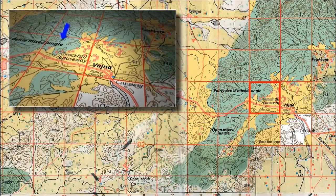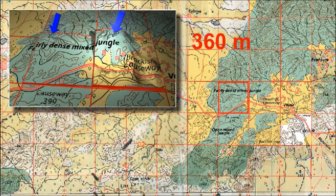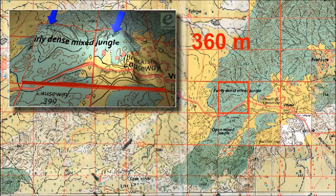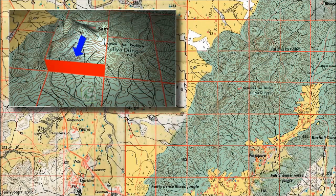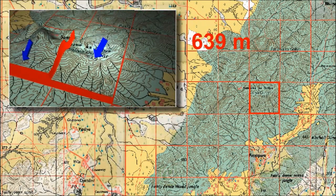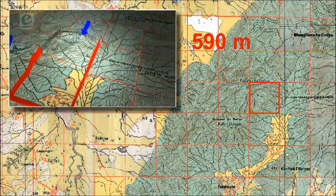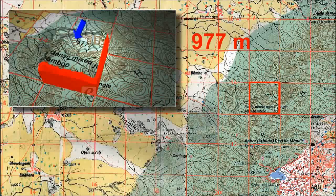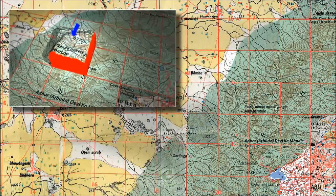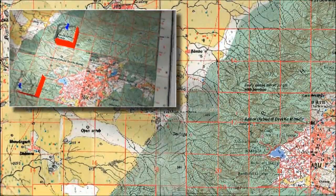Contours of 280 meters at grid 1403, 360 meters at grid 1303, and 400 meters at grid 1506 are shown on the sheet. Along with closely spaced contours, the spot heights of 639 at grid 1606, 590, 842, and 977 are also marked, which represent mountain peaks with steep slopes.